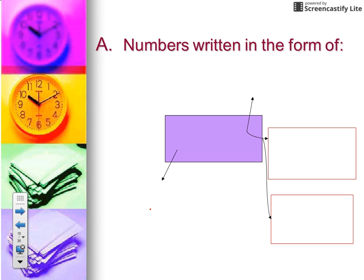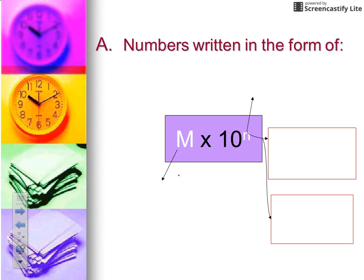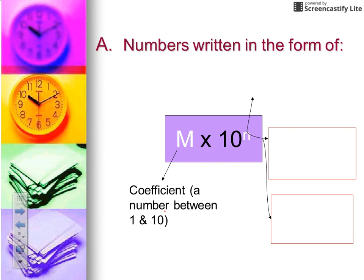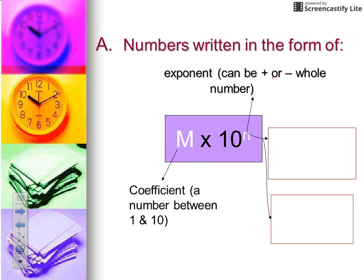What we do is write our numbers in the form of scientific notation, otherwise known as exponential notation. Numbers in scientific notation are written in the form of m times 10 to the nth power. M represents your coefficient — a number that is greater than or equal to 1 but less than 10. That is followed by times 10, which is standard. N represents your exponent, and the exponent can be a positive or negative whole number.